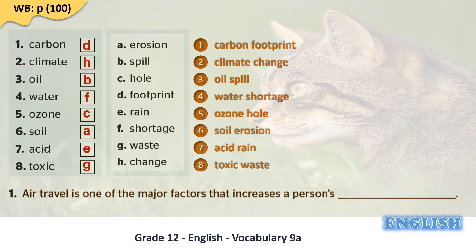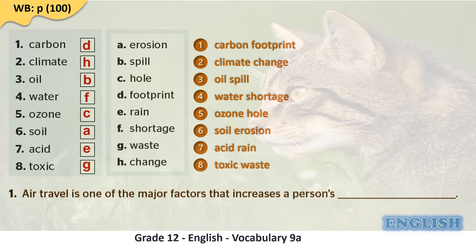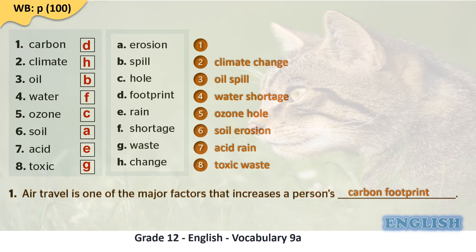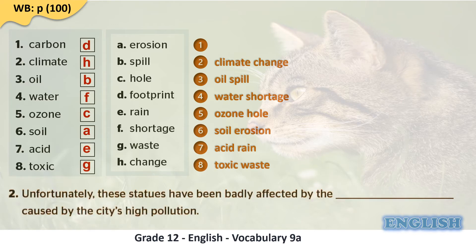Now we are supposed to complete the sentences at the bottom with one of the environmental issues mentioned above. Sentence one says: air travel is one of the major factors that increases a person's what? When you travel by plane you consume oil which produces carbon, so this increases the person's carbon footprint. Sentence two: unfortunately these statues have been badly affected by the acid rain caused by the city's high pollution.